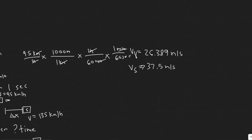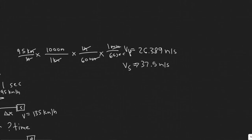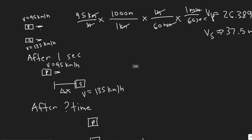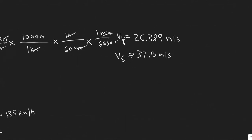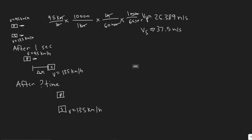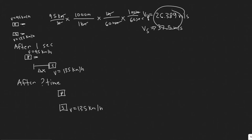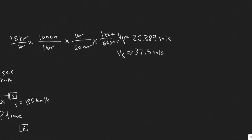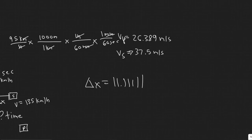So V of the speeder is 37.5 m/s and V of the police car is 26.389 m/s. In that one second that passes, the speeder travels 37.5 meters and the police car travels 26.389 meters. The distance the speeder is ahead is 37.5 minus 26.389, which gives delta x of about 11.11 meters. So now we know the initial separation between them.